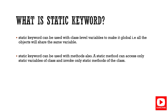Next question: what is the static keyword? The static keyword can be used with class-level variables to make them globally accessible without creating an object. Once declared as static, a method or variable can be used directly without initialization. A static method can only access static variables of the class and can invoke only static methods of that class.